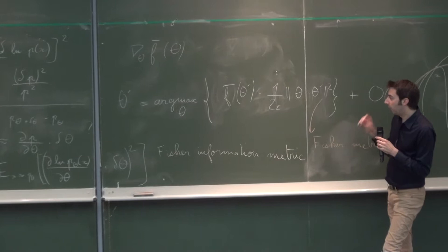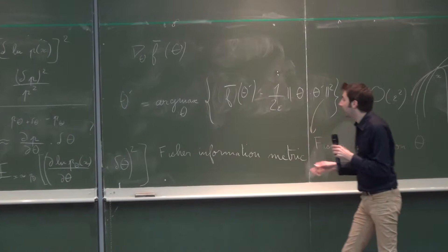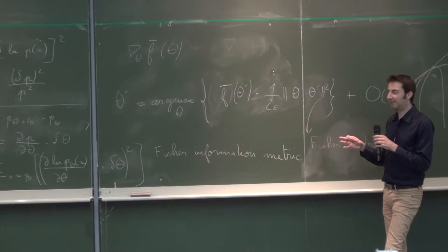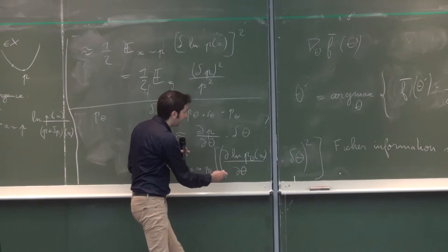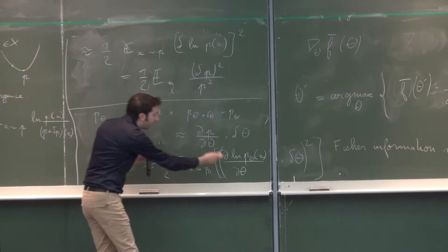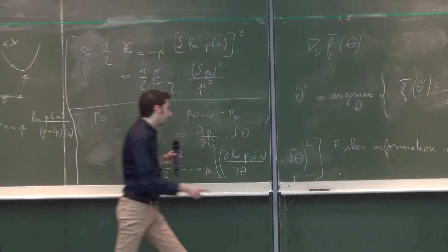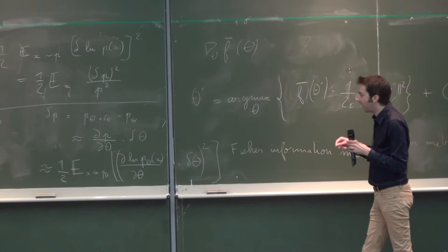This Fisher information metric is given by the Fisher information matrix. If you decompose theta in any given basis, this is given by a symmetric matrix whose components are products of partial derivatives of the logarithm with respect to theta. The (i,j) component is the derivative with respect to theta_i times the derivative with respect to theta_j.